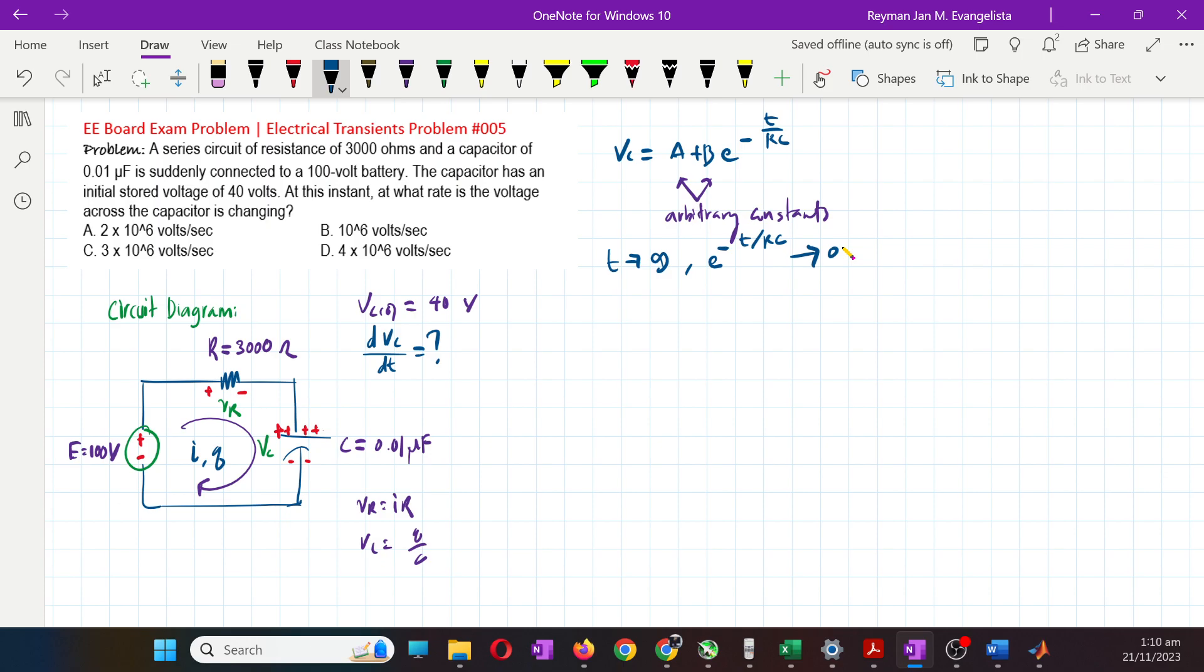In our circuit, this means the voltage across the capacitor after a long time, regardless of whether it has an initial charge or not, as long as it is charging, will equal the voltage source. After a long time, Vc will become 100.